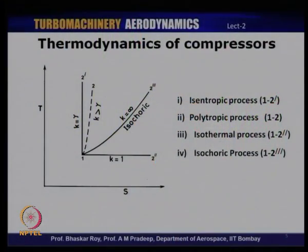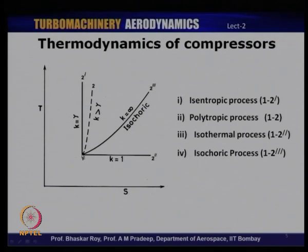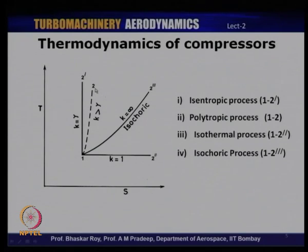Let us express these same processes on a temperature-entropy plot. When K equals gamma, the compression represents an isentropic compression — you get a vertical line because the x-axis is entropy and entropy is constant. In actual cycles, the compression may not be truly adiabatic, so the exponent K may differ from the ratio of specific heats. The dotted line represents a polytropic process where the exponent is not necessarily equal to gamma. The other extreme — 1 to 2 double prime where K equals 1 — is an isothermal process where temperature is constant, though non-isentropic.